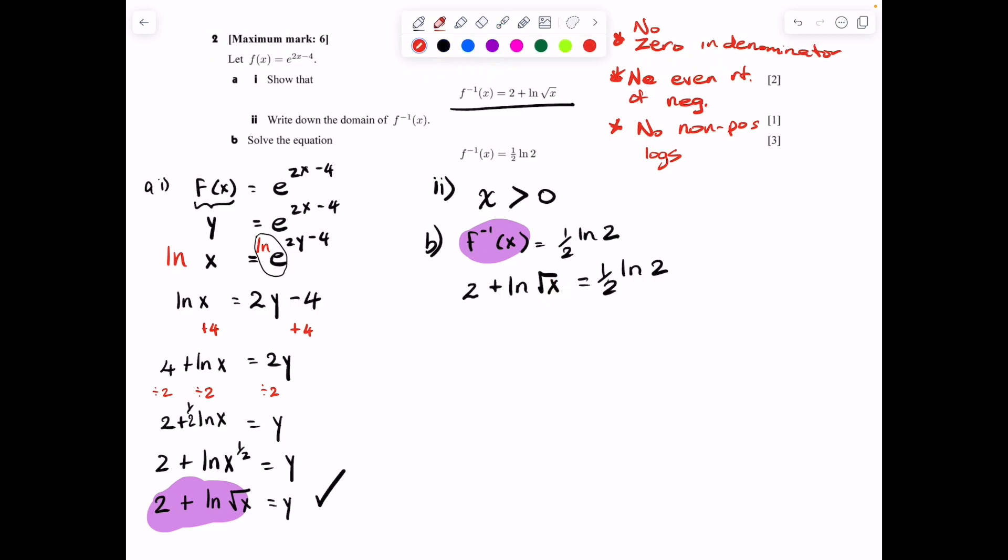So we're going to go ahead, subtract 2 from both sides. And you get that ln√x = 1/2 ln 2 - 2. All right. So we're closer. Now, using the laws of logs, we can condense this, but we can't yet because this does not have an ln.